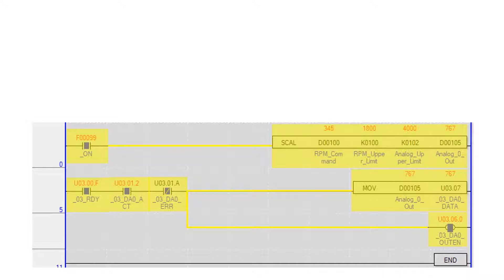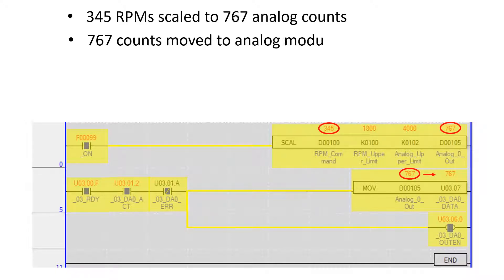Shown is a scaled RPM value of 345. The scaled count is 767 for an analog output of 1.92 volts to the VFD.